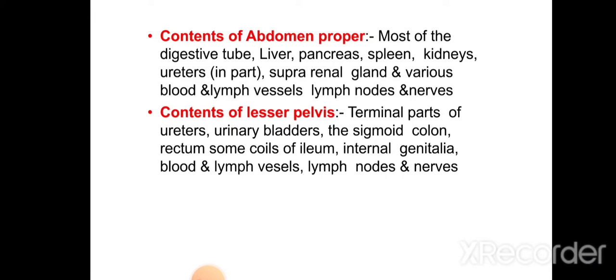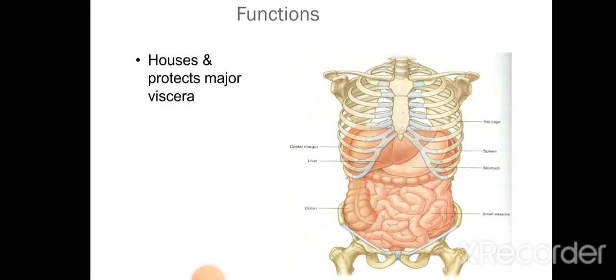Contents of the lesser pelvis include the terminal parts of the ureter, urinary bladder, sigmoid colon, rectum, some coils of ileum, internal genitalia, blood vessels, lymph vessels, and nerves. The function of the abdomen is that it houses and protects the major viscera of the abdominal cavity.